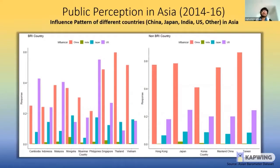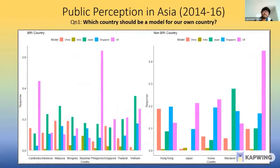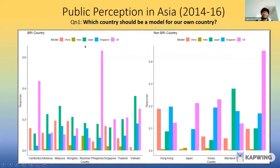In this slide, we have a more granular picture of public perception in Asia. We divided the 14 countries into two sectors: BRI countries where BRI investment has occurred, and non-BRI countries. For example, in Cambodia, around 25% of people think China is the most influential country in their region, while around 45% think US is most influential. We also asked which country should be a model for their own country's economic development. Almost none of the countries believe China should be a model; most believe US or Japan should be the model. For example, in the Philippines, around 67% think the US should be a model, while in Indonesia around 25% believe Japan should be the model.